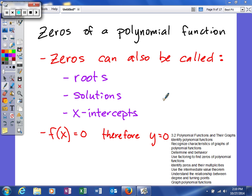Next in this section we'll be talking about how to find zeros of a polynomial function. Zeros have different names. Zeros can be called roots, solutions, or x-intercepts.